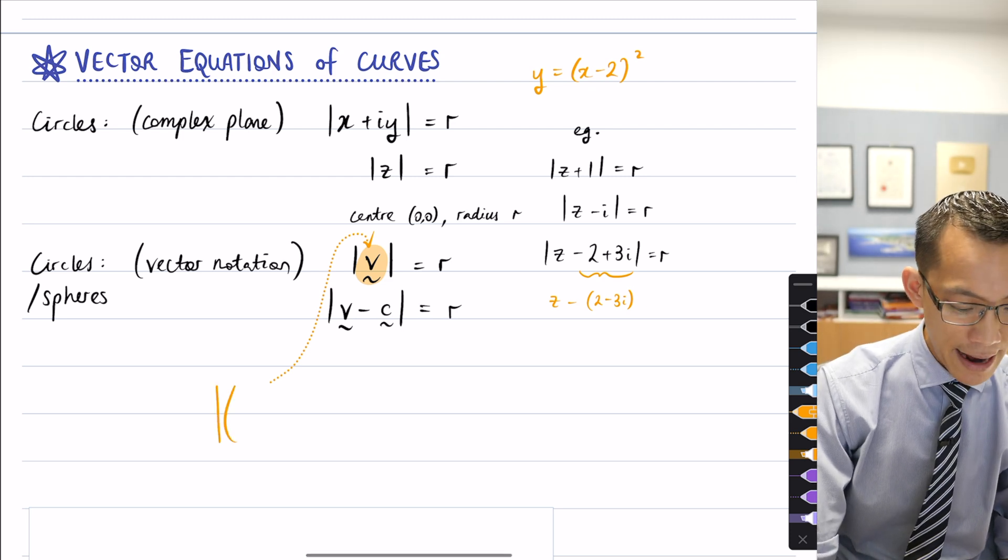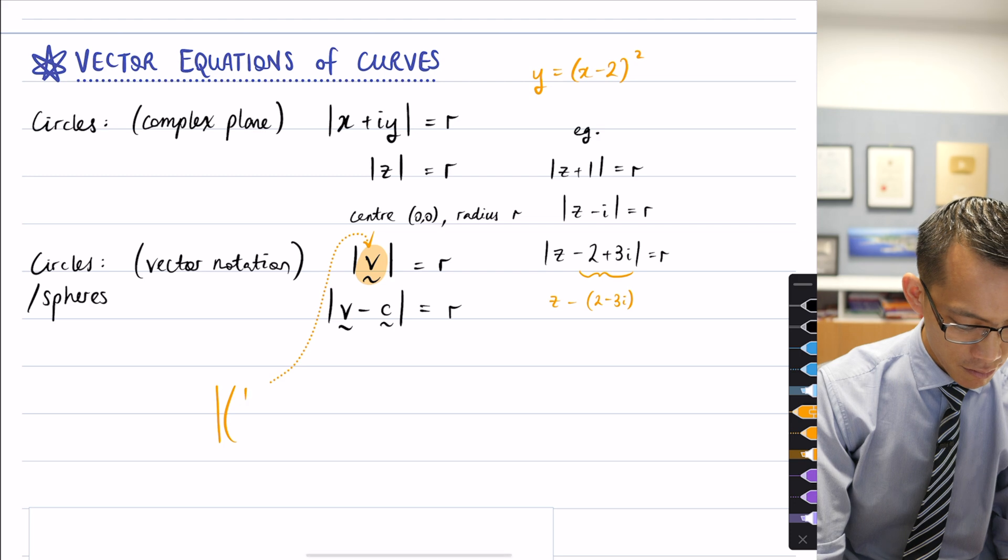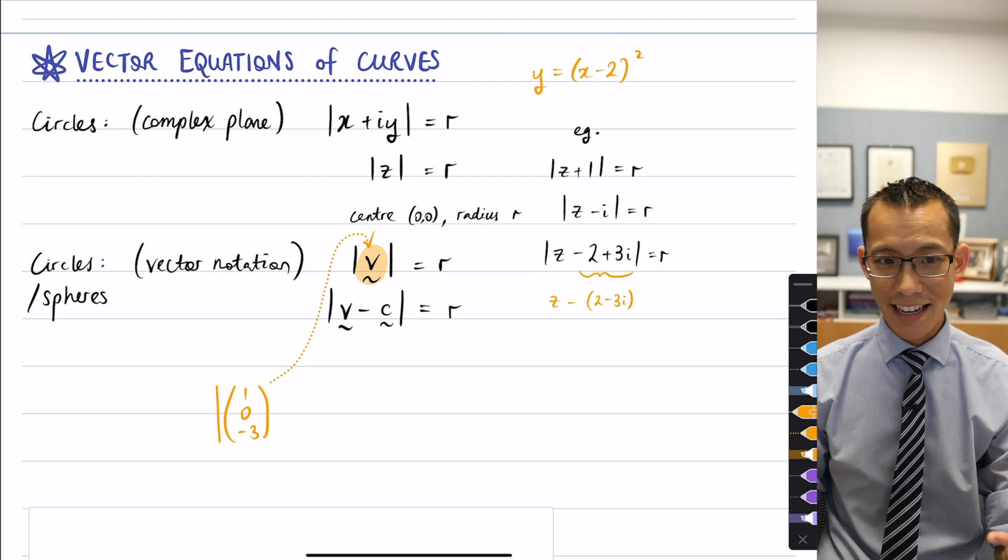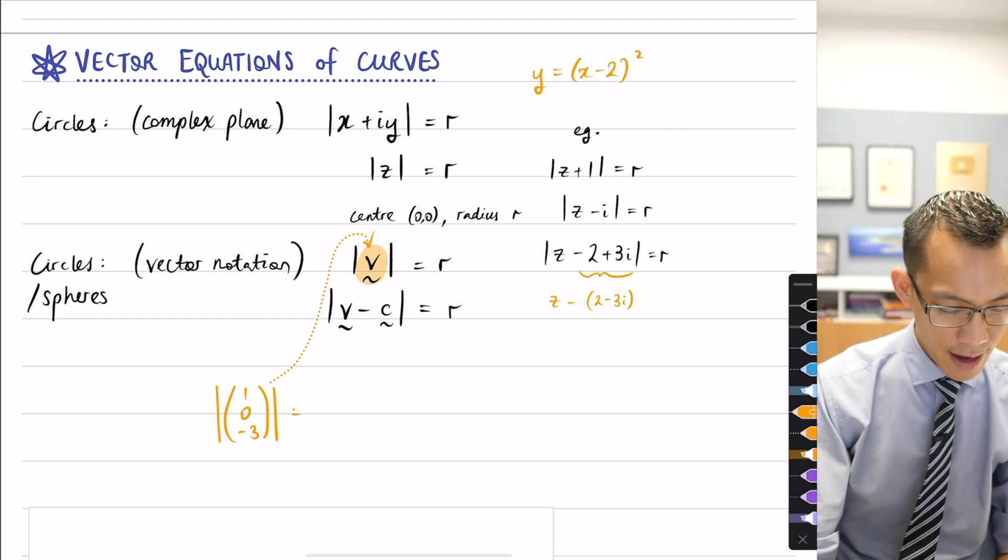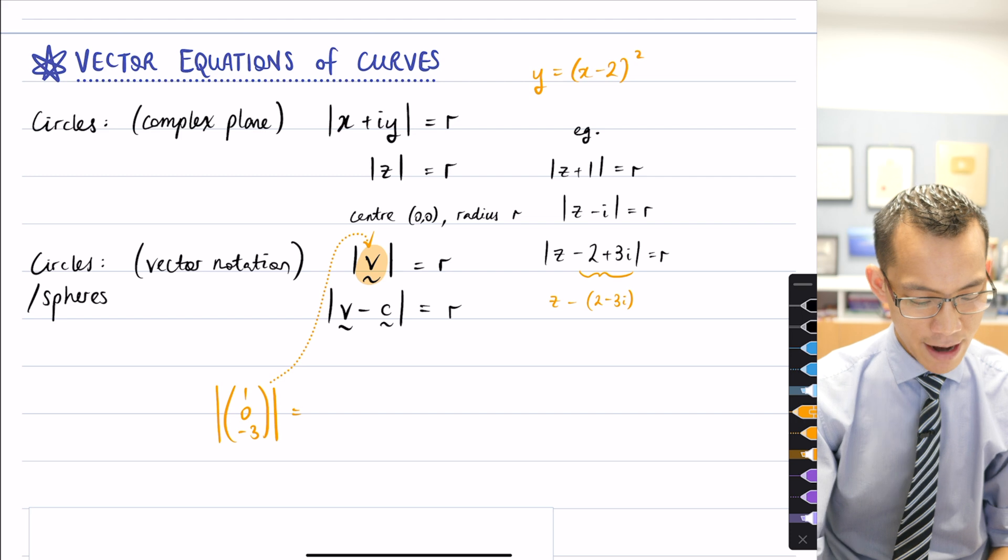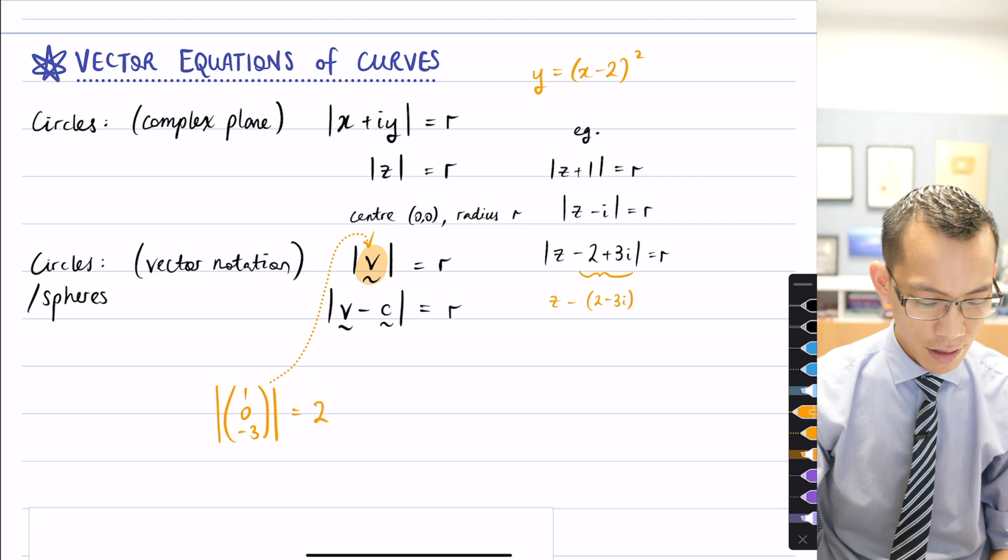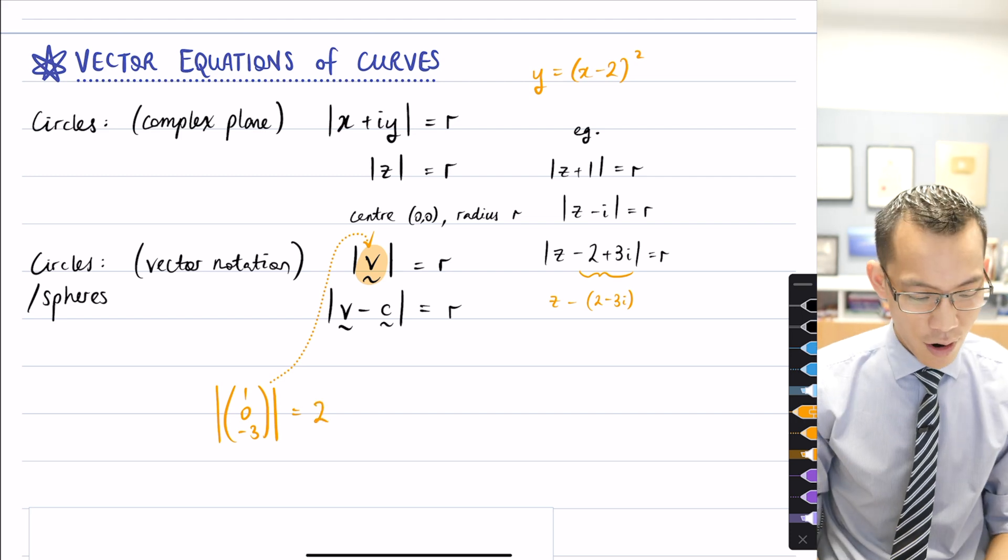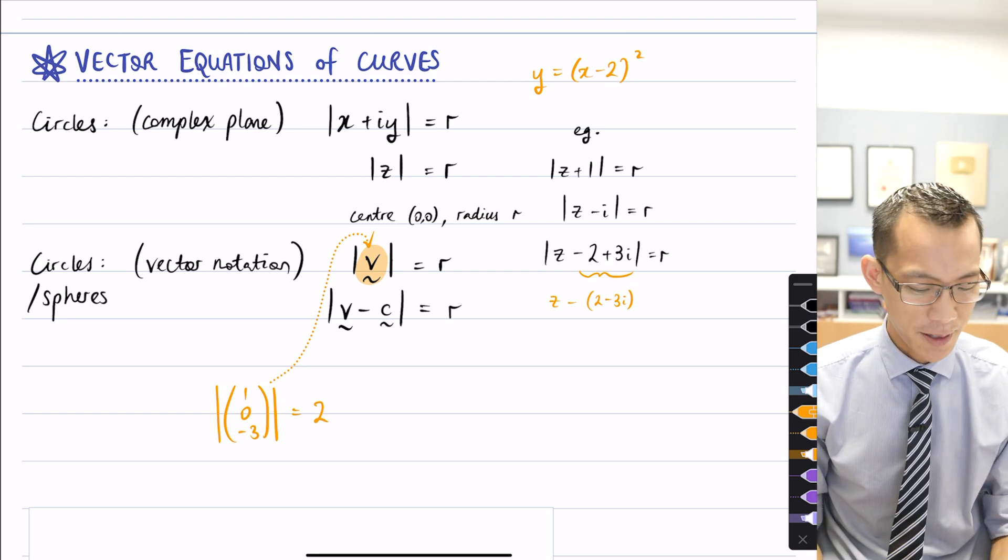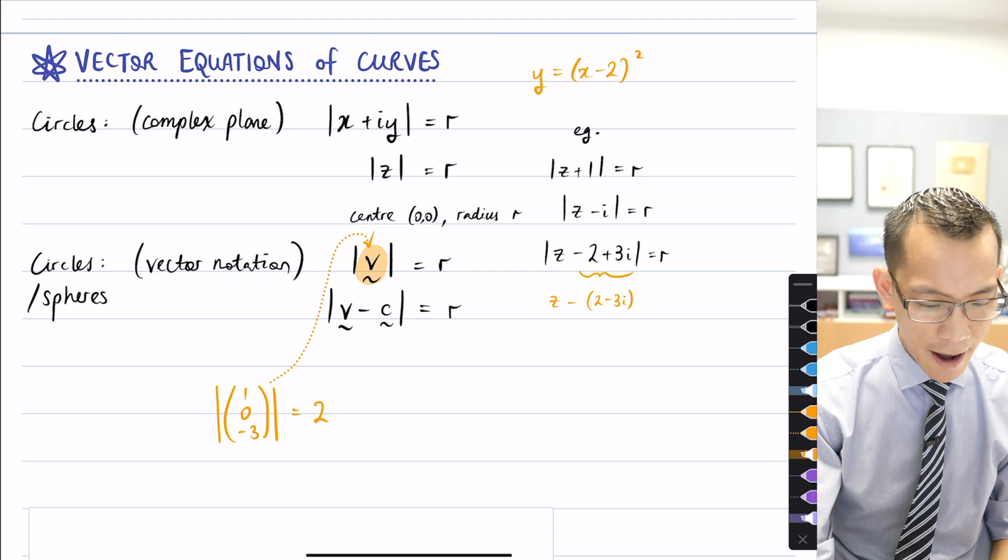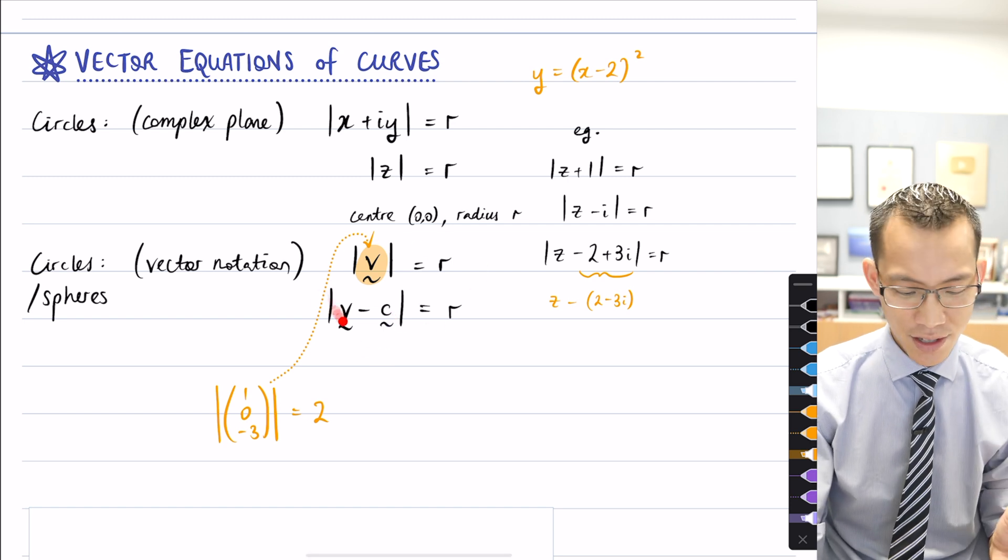The magnitude of, you know, 1, 0, negative 3. And now, suddenly, you're in three dimensions. So this is still the magnitude of a vector equals some arbitrary radius. Maybe I'll just say radius 2. And that there is the equation of a sphere. It's not a circle anymore because I know I'm in three dimensions. So, a bit strange that you can use this same notation for two dimensions or three dimensions.